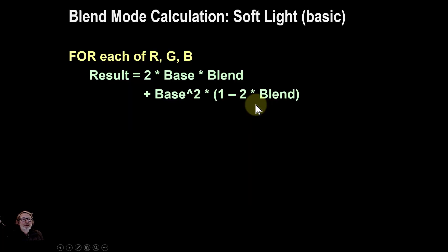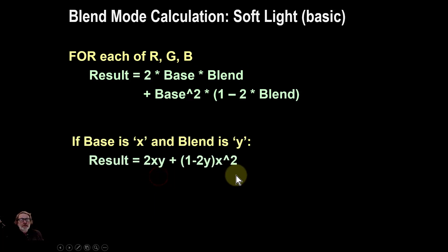So let's go a bit further into this. So a basic calculation which we're going to explore in a little bit of detail is this. So the result is 2 times the base times the blend value plus the base squared times 1 minus 2 times the blend. And we can play around this with putting it into a formula in which we make base x and blend y, and then we start plotting it on graphs.